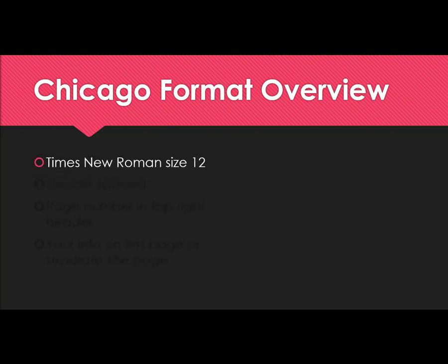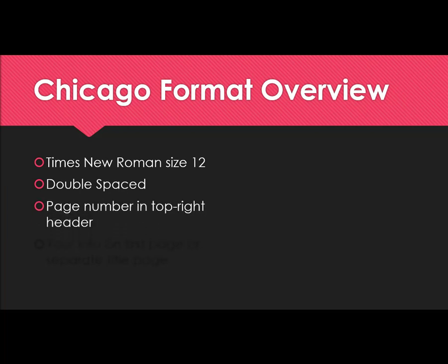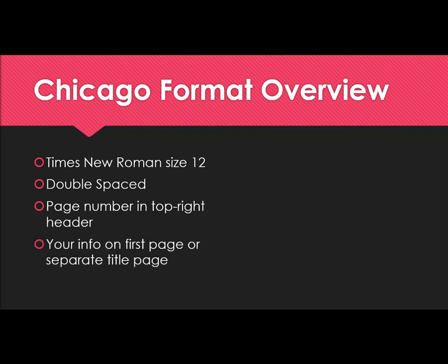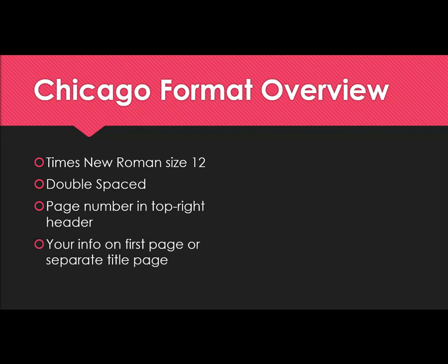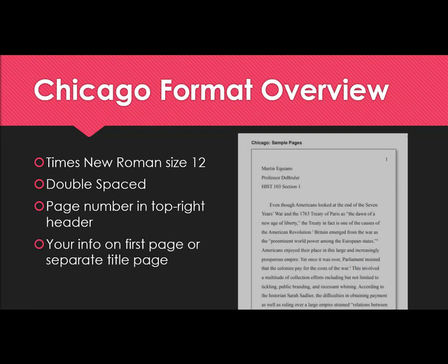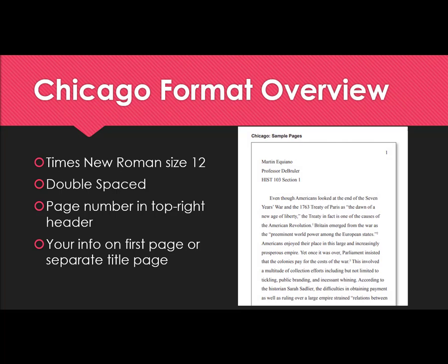Your paper will be in double-spaced Times New Roman font size 12, and you'll need to include a page number in the upper right header of each page. You can include your information either on the first page of the body of your paper or on a separate title page. Either way, you want to include the title of your paper on the same page you start the text, centered on its own line.